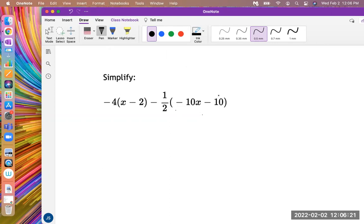So the biggest thing is here we can get rid of these parentheses by distributing that number that we have on the outside. So negative 4 times x is negative 4x, and then negative 4 times negative 2 is positive 8.